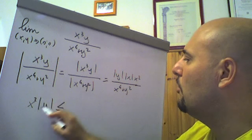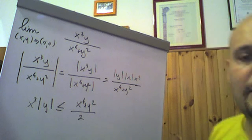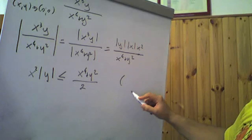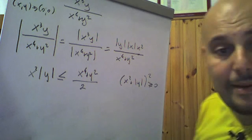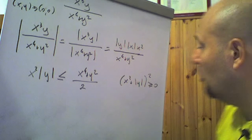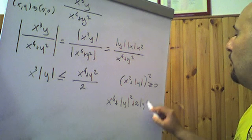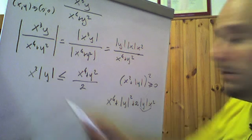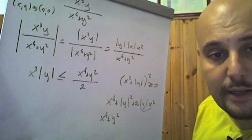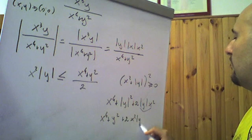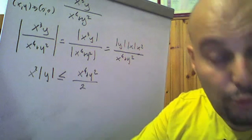We can say that x² · |y| is certainly less than or equal to ½(x⁴ + y²). Why? Because (x² - |y|)² ≥ 0 always. Expanding this binomial square gives x⁴ + |y|² + 2x²|y| ≥ 0, which means x²|y| ≤ ½(x⁴ + y²). So we have verified that x²|y| ≤ ½(x⁴ + y²).